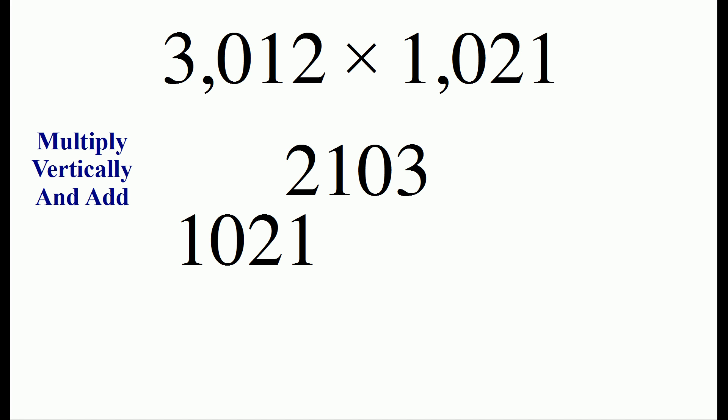And now what we're going to do is we're going to multiply vertically and add. So right now we only have two numbers which is 2 times 1 and that's going to give us our first digit of the answer which is 2.